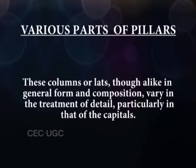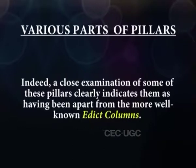These columns or Lats, though alike in general form and composition, vary in the treatment of detail, particularly in that of the capitals. It may not be out of place to refer to the possibility that some of these pillars might have been standing from before the days of Ashoka. This is suggested by the Rupnath and the Sasaram Edicts and Pillar Edict No. 7, where Ashoka says that rescripts of the Law of Piety should be engraved on rocks and on stone pillars wherever such pillars might have been standing. It is not impossible, hence, that the idea of Edict pillars was first suggested to Ashoka by some pre-existing pillars which he also thought of utilizing in his new mission.